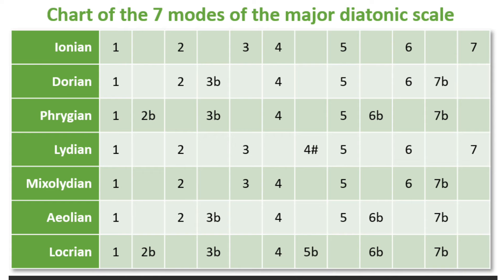The seven modes are as follows: Ionian, Dorian, Phrygian, Lydian, Mixolydian, Aeolian, and Locrian. I say Locrian because it sounds gnarly — it sounds more abrasive, and Locrian is a pretty abrasive, haunting, gnarly, gross mode in and of itself.